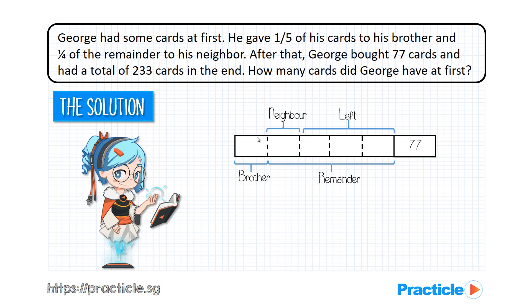And finally, we know that the total number of cards in the end was 233. So 233 would refer to all these cards that he was left with, plus the 77 cards that he bought. So, by looking at this model, can you now figure out how to solve the problem sum?